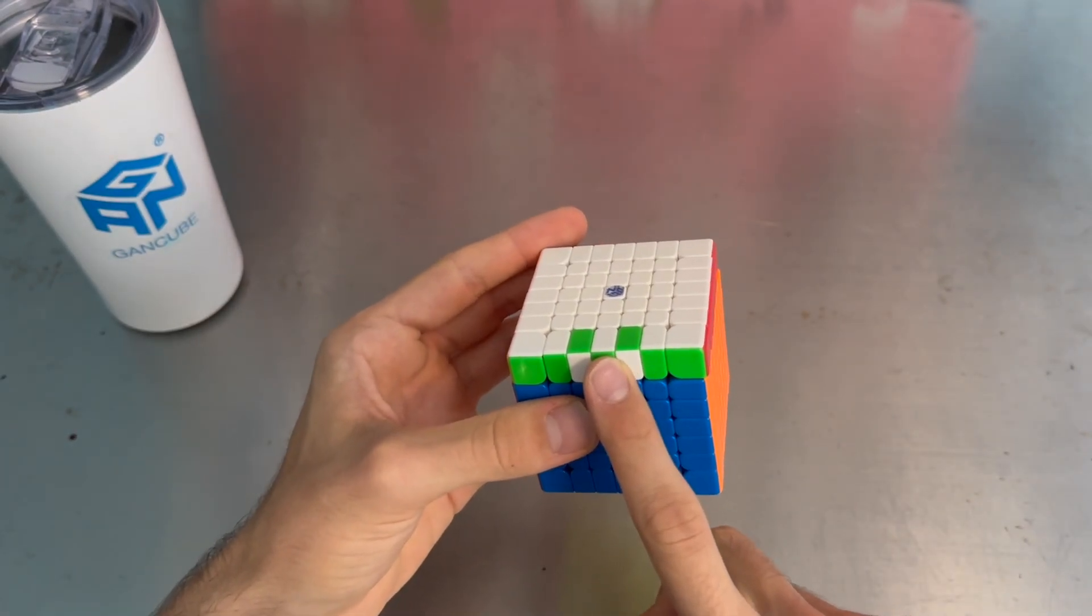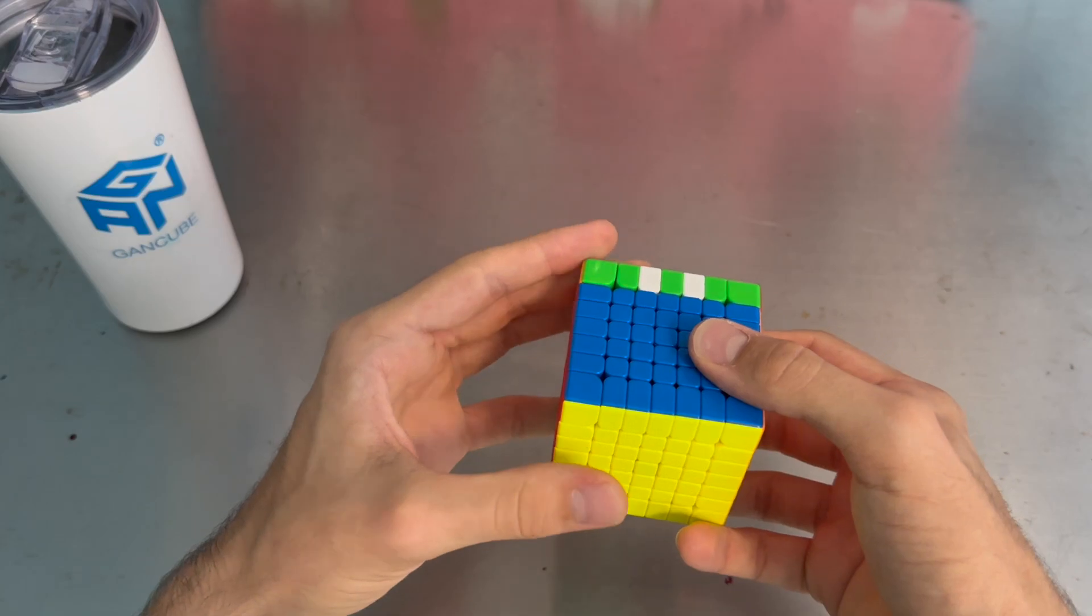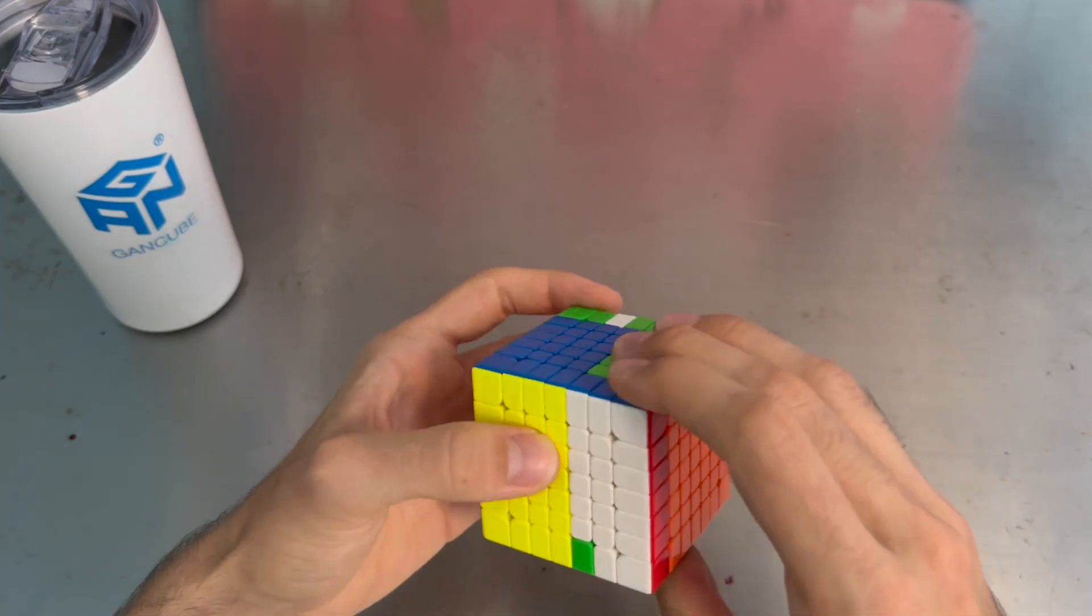If we have the edge at the front, it might be worth it to do an X and a left hand re-grip, and then go ahead and do the R like that.